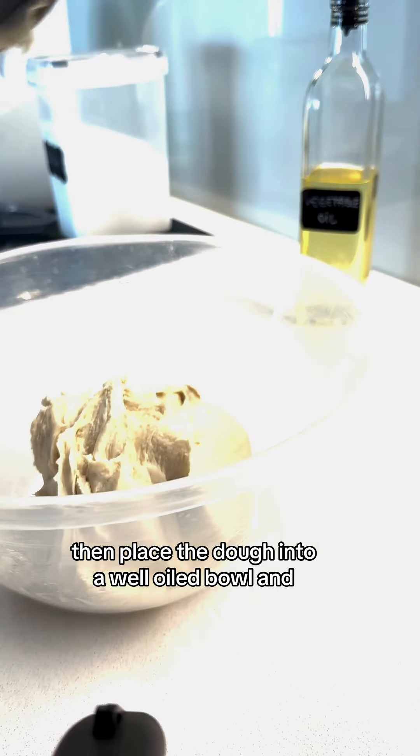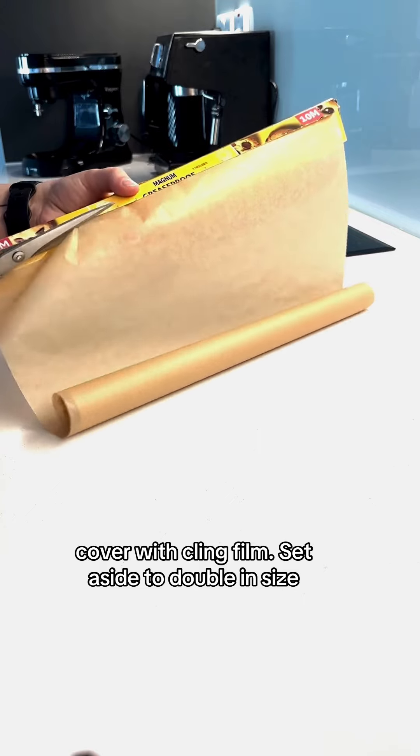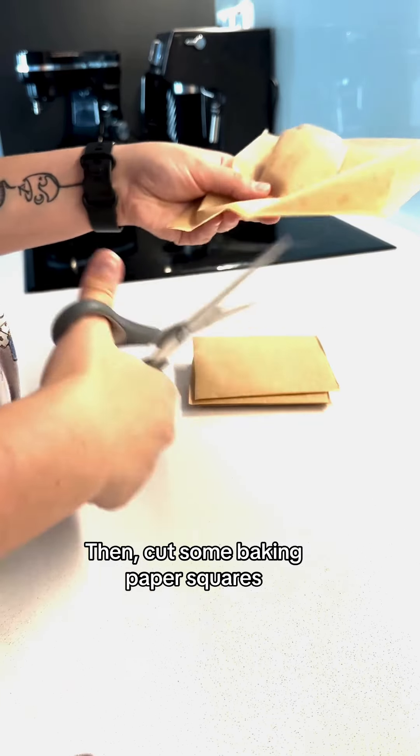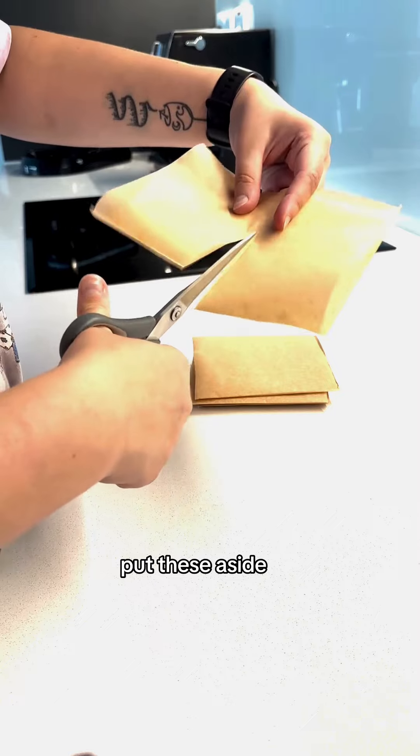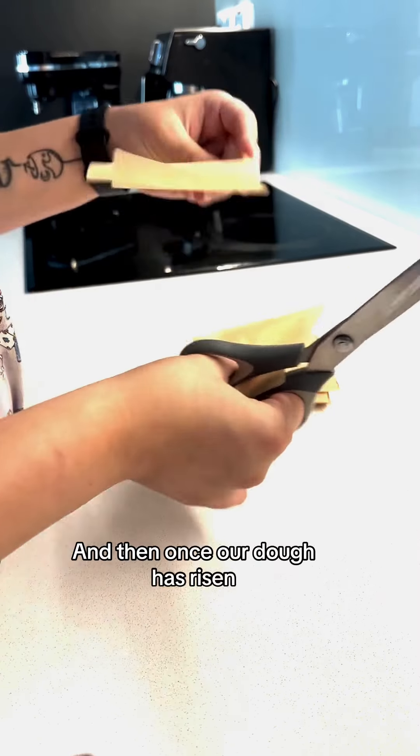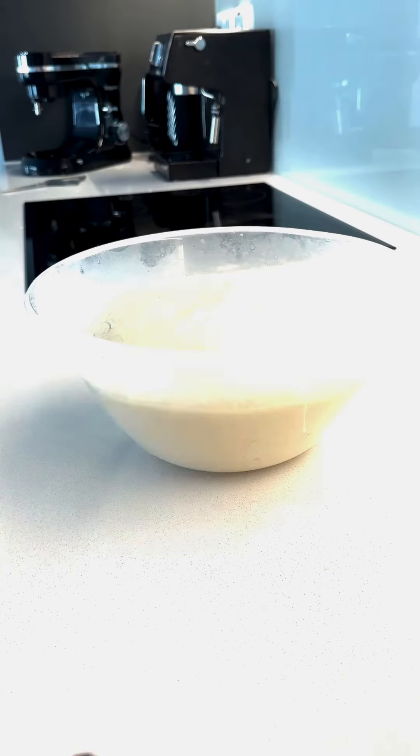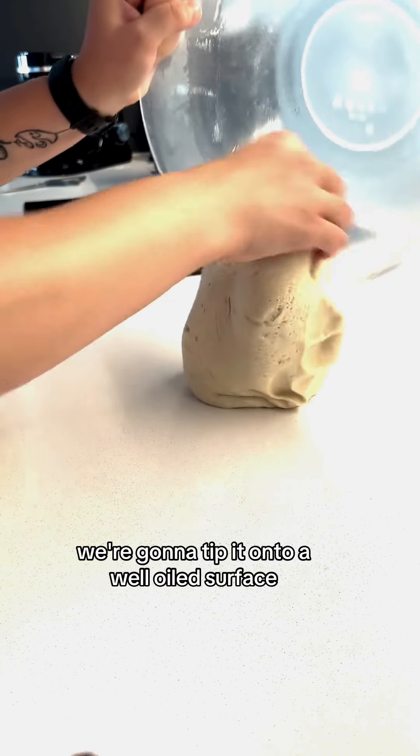Then place the dough into a well-oiled bowl, covered with cling film, set aside to double in size. Create some baking paper squares, put these aside and then once our dough has risen we're gonna tip it